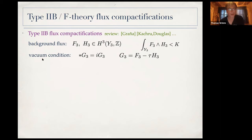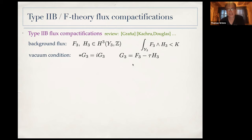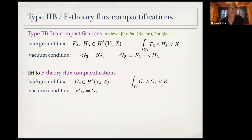There is a condition on these background fluxes which defines the vacua of this theory. It states that the Hodge star acting on a certain form — a linear combination with complex coefficients — gives you a factor of i, telling you that g3 is a very specific Hodge component. Furthermore, there exists a lift to Calabi-Yau four-folds, where three-forms are lifted to a quantized four-form G4 satisfying a boundedness condition.